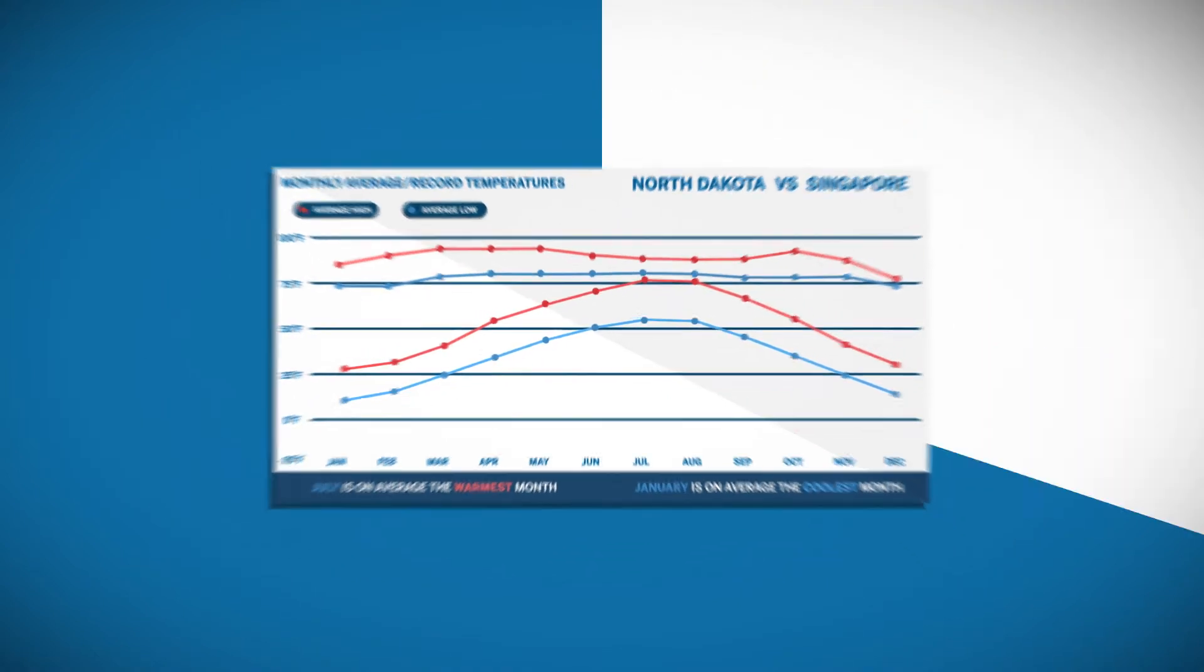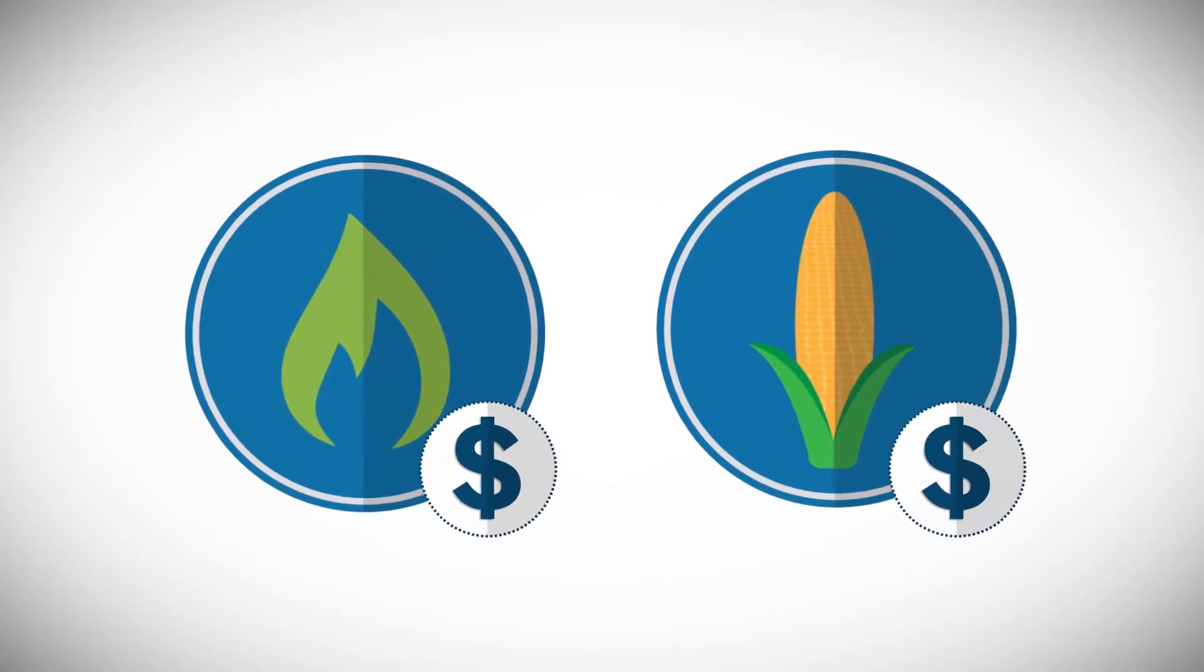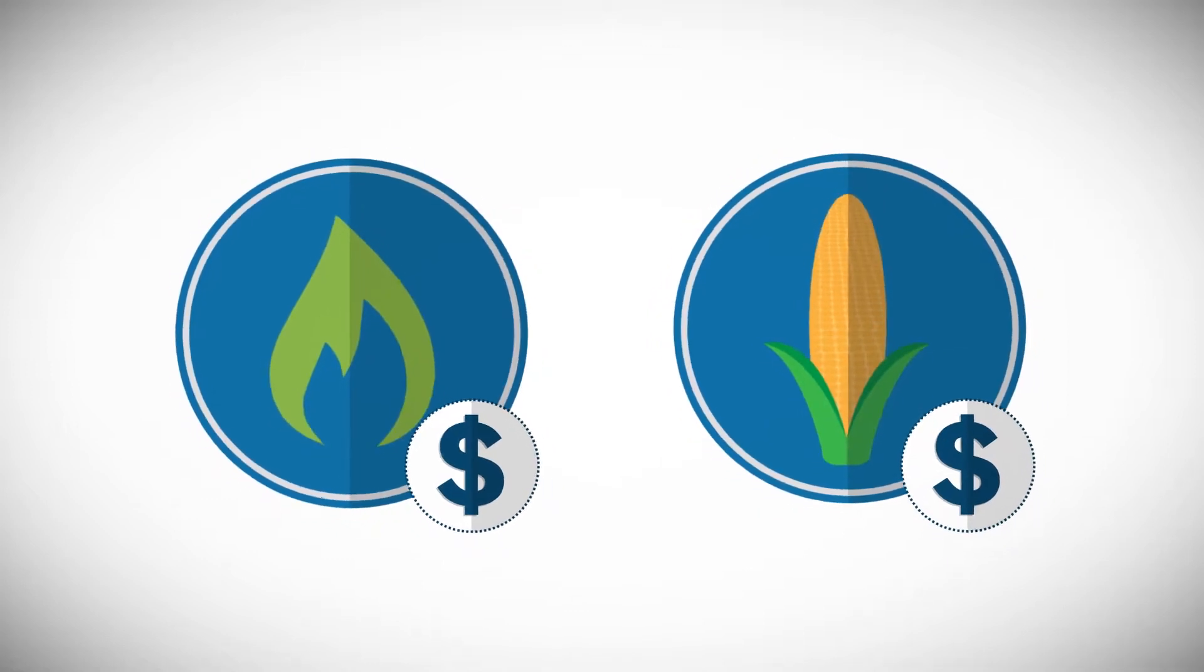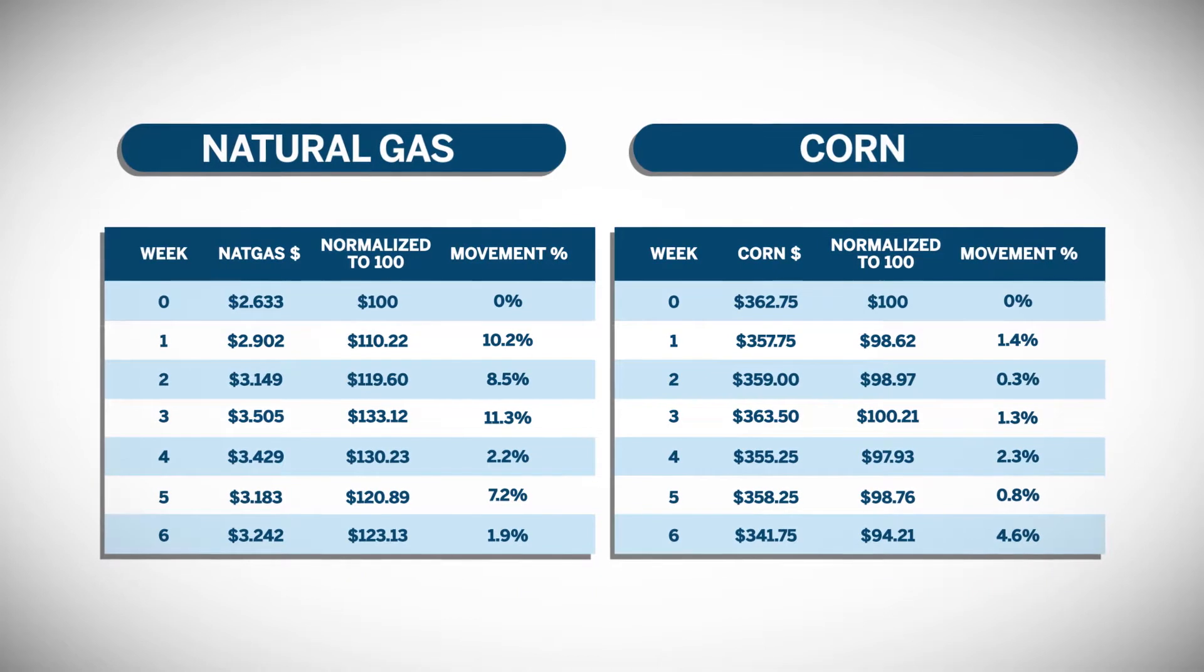Another example could be natural gas prices compared to corn prices. Even though corn and natural gas are very different assets, the bounciness of their respective prices can be compared. If we look at example price changes in percentage terms for natural gas versus corn,